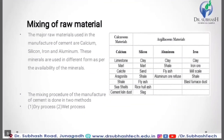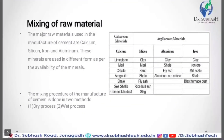The major raw materials used in the manufacturing of cement are calcium, silicon, iron and aluminium. These minerals are used in different forms as per the availability of the material. There are two types of raw material: first is calcareous material and second is argillaceous material.